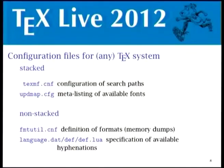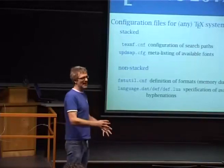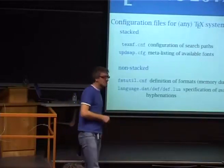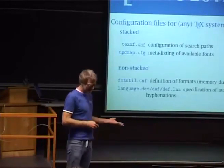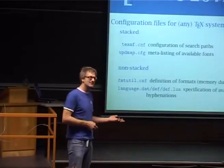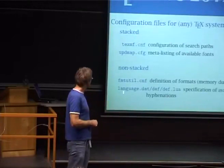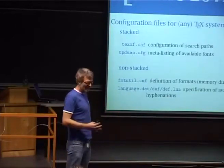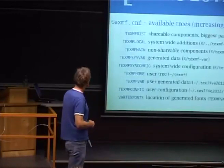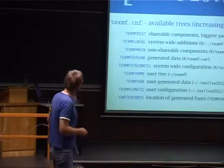updmap.cfg is for embedding fonts. There are thousands of fonts in the TeX system, and the different engines — dvips, dvipdfm, XeTeX — this configuration defines how they use fonts and which fonts are used. This is also stacked since 2012, so all the updmap config files are read. In contrast, the non-stacked ones are the format utilities — definitions of formats which are memory dumps. And language definition files provide which hyphenations are available in the TeX system.